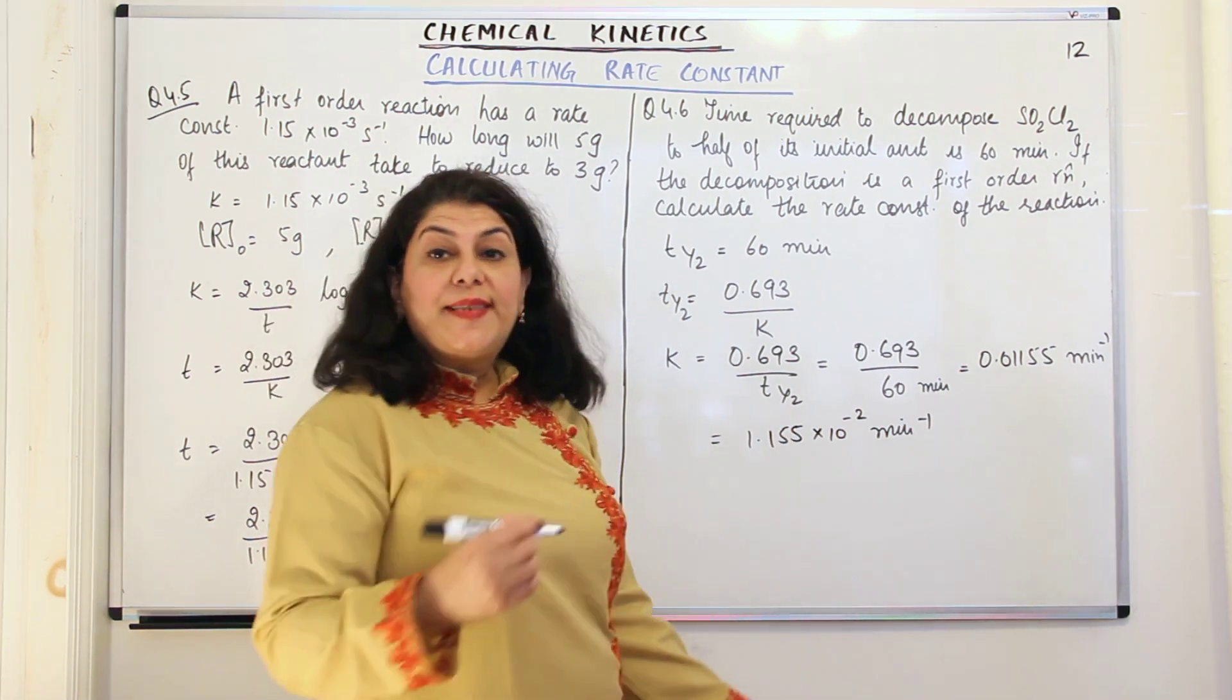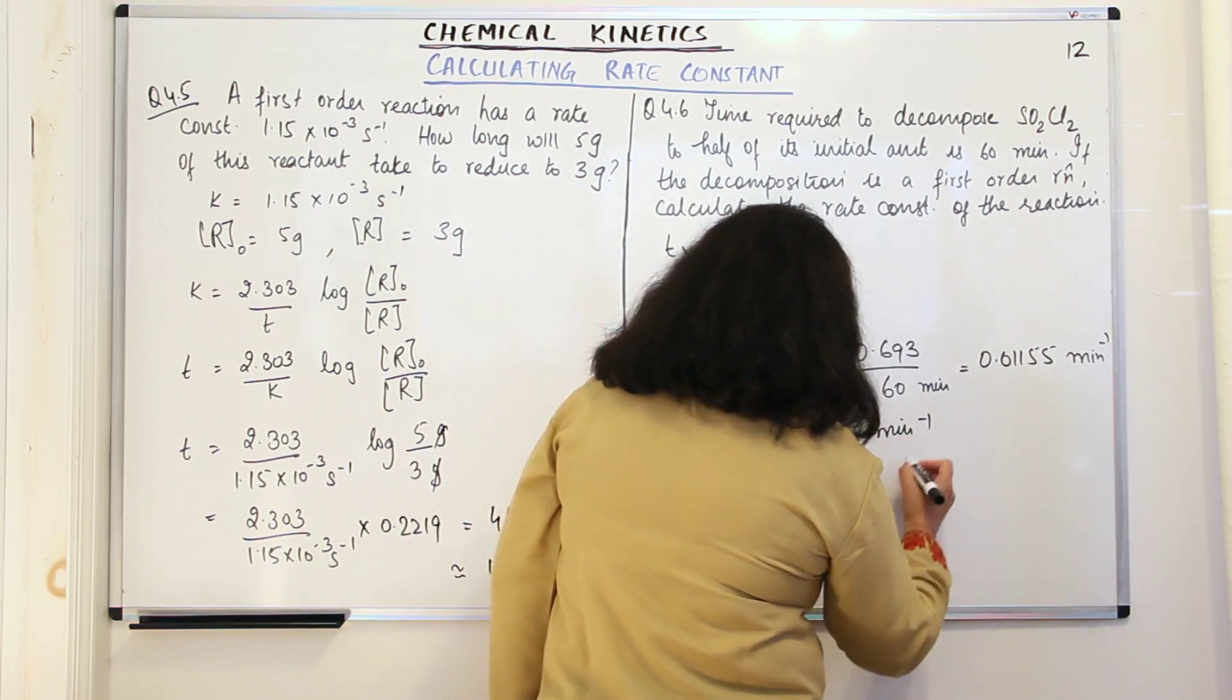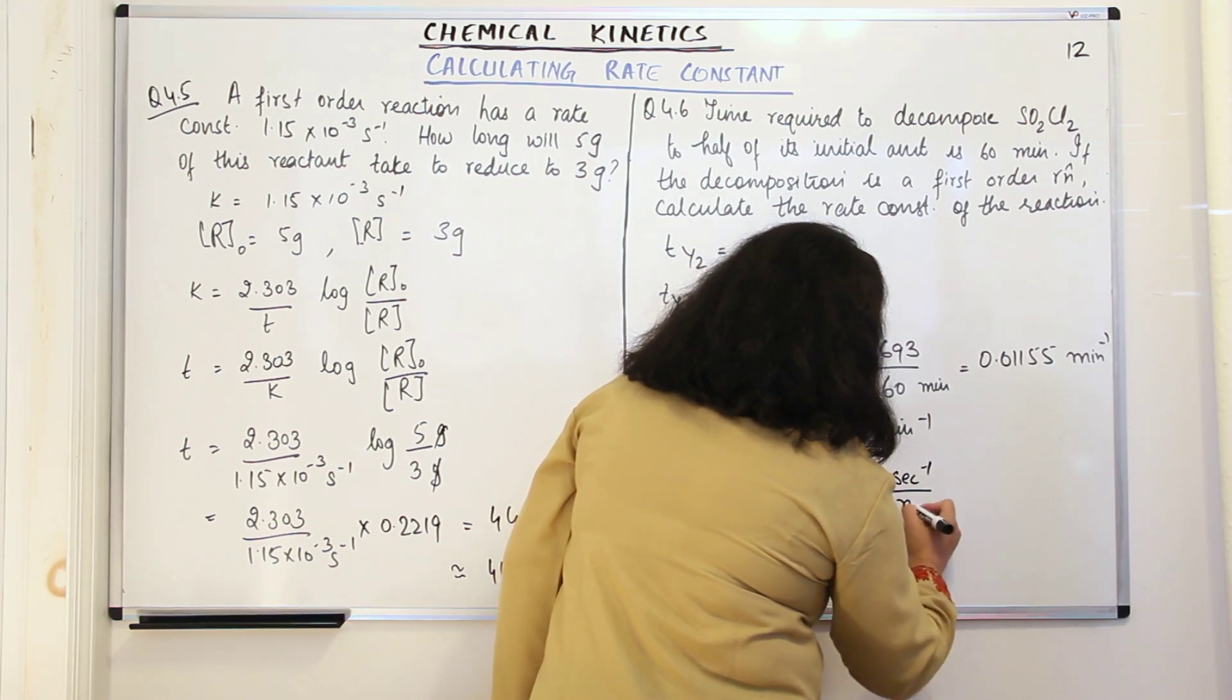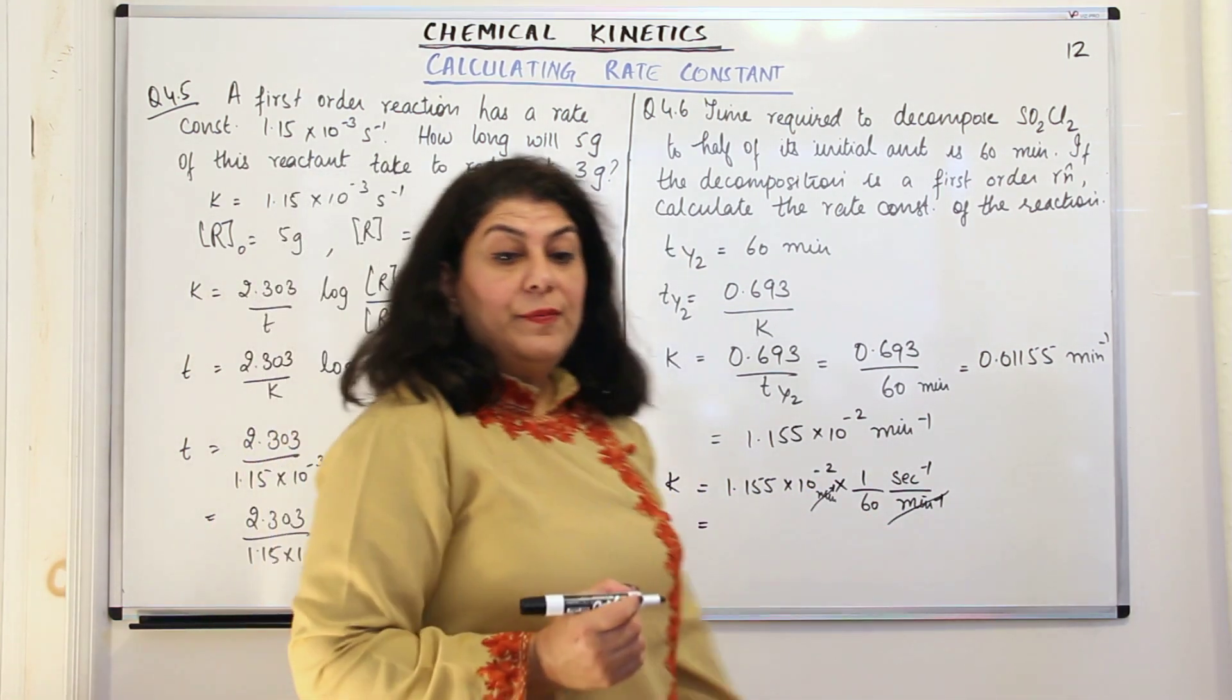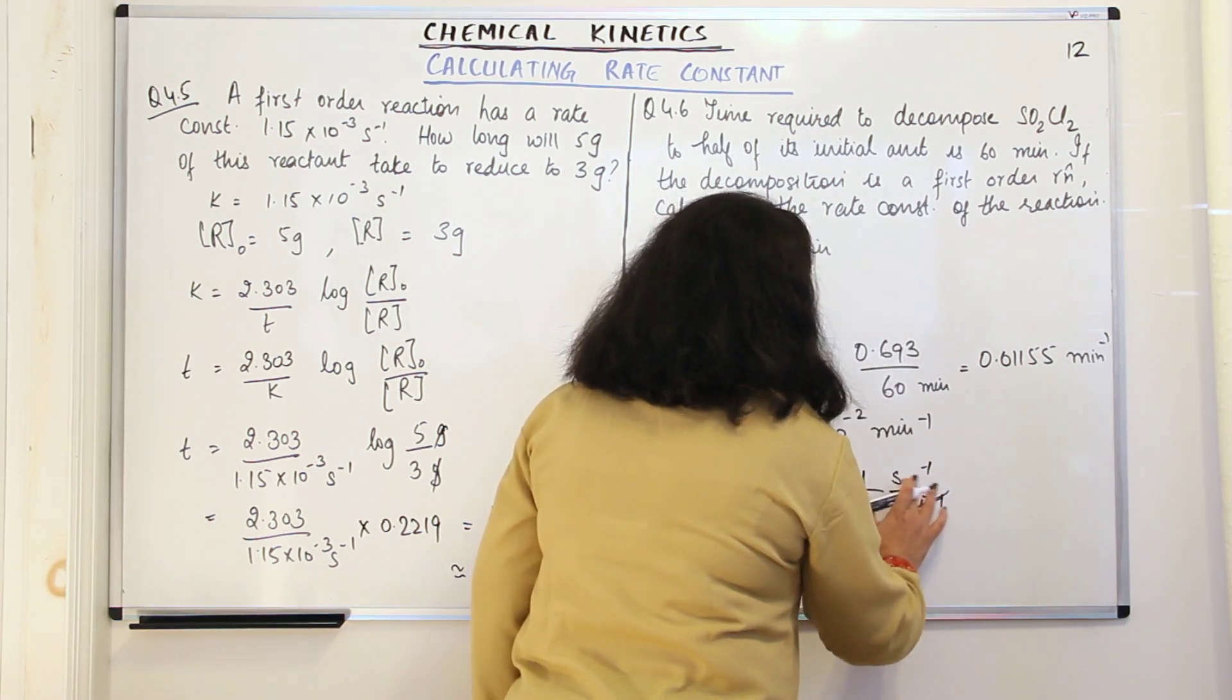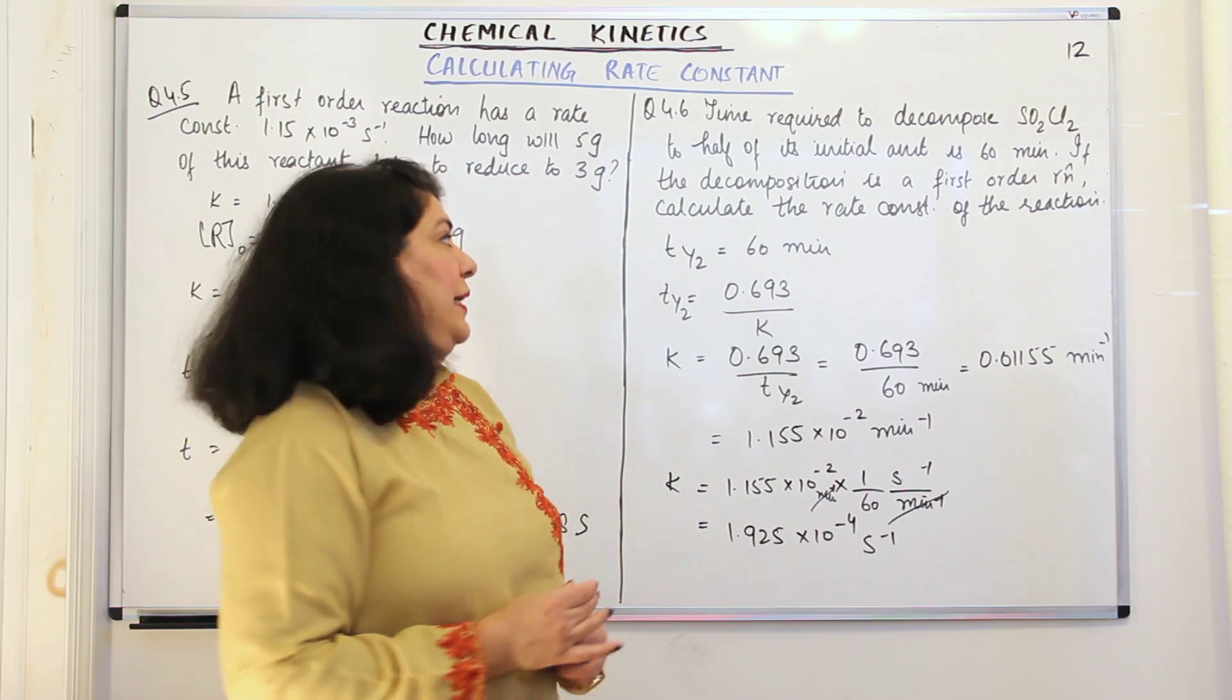Now if we want to solve this in per second, K would be equal to 1.155 into 10 to the power minus 2 into 1 upon 60. This is in per minute, and this would be in per second upon per minute. So the per minute and per minute will get cancelled. When you divide this value by 60, you will get this to be equal to 1.925 into 10 to the power minus 4 per second.